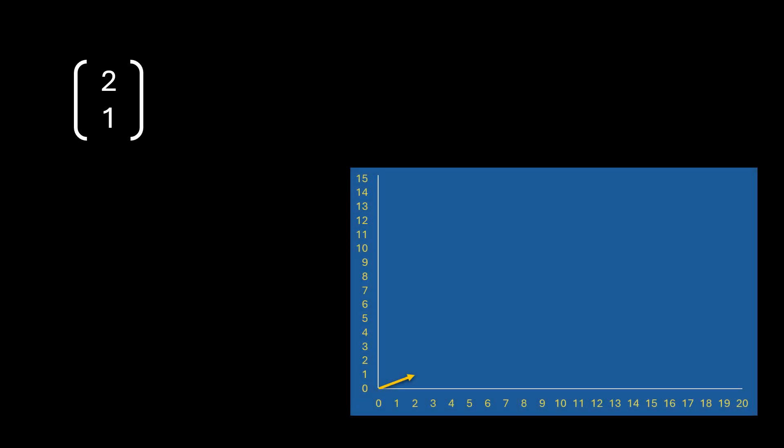Let's look at eigenvectors and eigenvalues. Consider this column matrix [2, 1]. It has two rows and one column. This matrix can be considered a vector in two-dimensional space. This means it has magnitude, which is the length of the vector, and it has direction, which is the angle it makes with the x-axis.